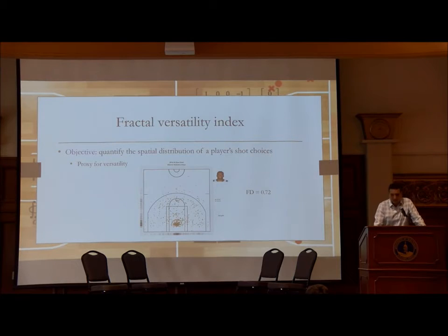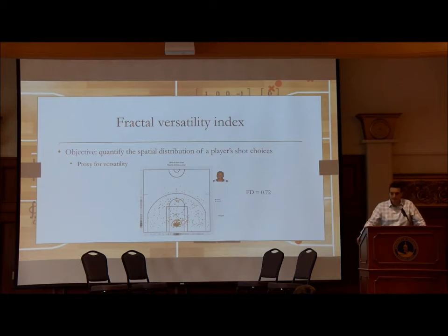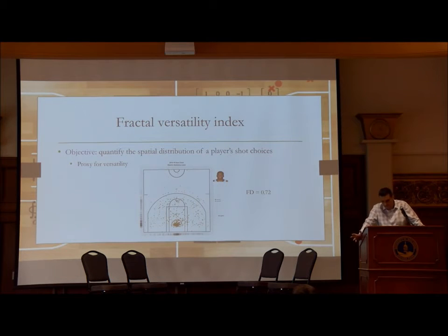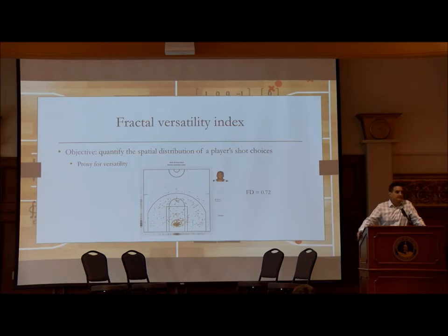One way to use fractal dimensionality is to define what I call a Fractal Versatility Index. The objective is to quantify the spatial distribution of a player's shots — where does this player attack from? Can they spread the floor? Are they a single-dimensional player? This serves as a proxy for offensive versatility. For example, looking at Nikola Jokic's shot chart from his sophomore NBA campaign, when he didn't yet have a reliable three-point shot, most of his shots were around the rim and the fractal dimensionality is very small — 0.72, just below a single dimension.